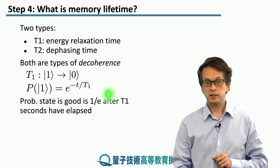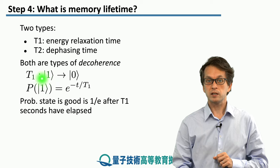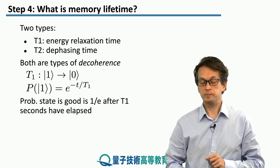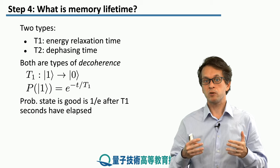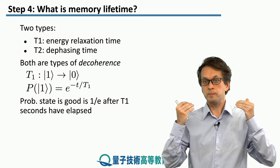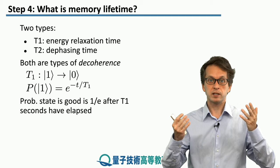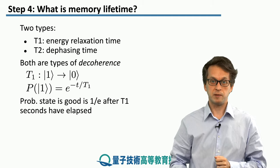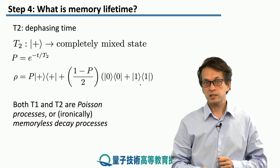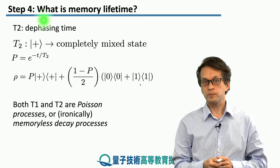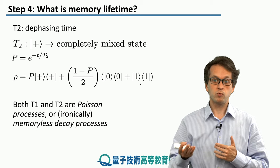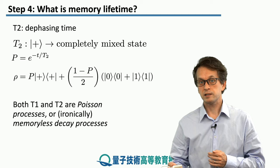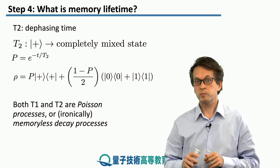So the probability that after T1 seconds we find our state in state 1 is given by 1 over e. This process of going from 1 to 0 captures the fact that 0 is typically encoded into a state of an atom that has lower energy — that's why we call it the energy relaxation time. Now for the dephasing time T2, this gives us a timescale where we lose phase coherence in our qubit. If we are only using zeros and ones — implementing classical communication — then T1 is important, but T2 not so much, because there is no coherence; we are not using superpositions.